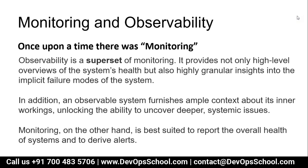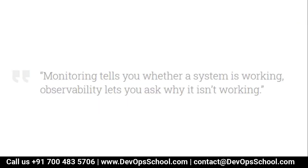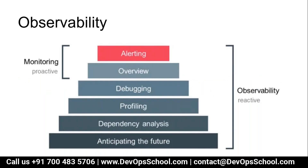In simple terms, we are not only doing monitoring — we have in-depth information about the system, how it works, and also fixing issues through observability. Monitoring on the other hand is best suited to report the overall health of the system and derive alerts — that was the job of monitoring. Monitoring tells you whether a system is working, but observability lets you ask why it's not working. That's the key difference between monitoring and observability.